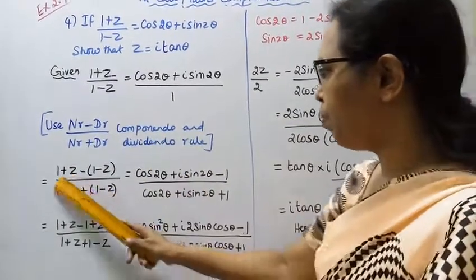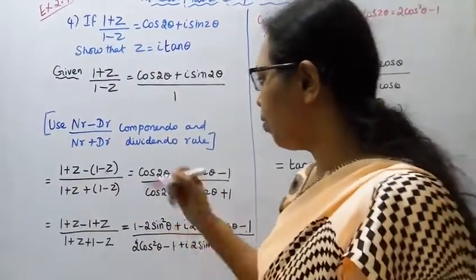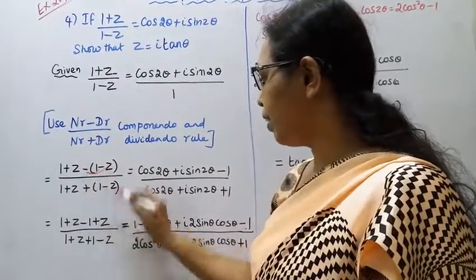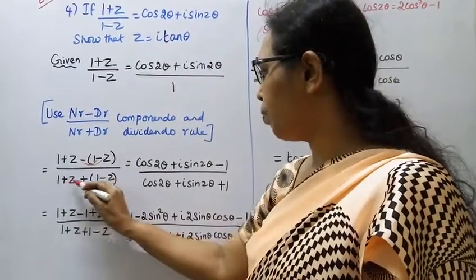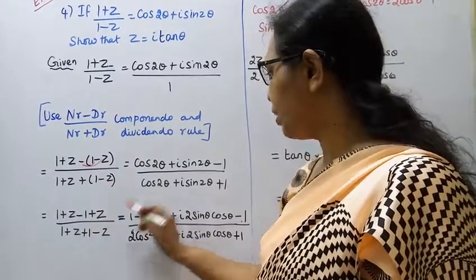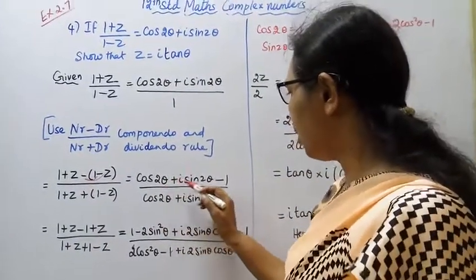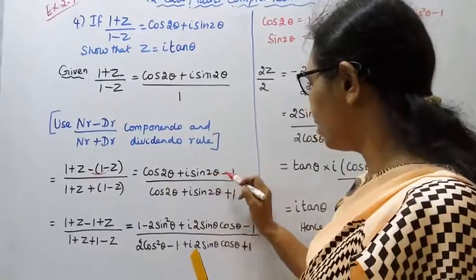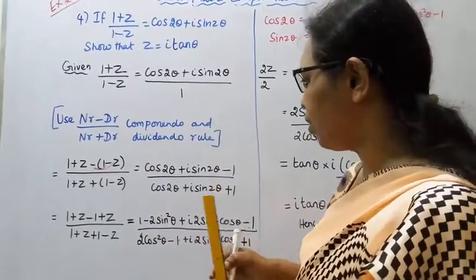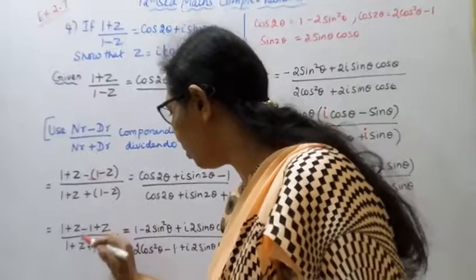Simplifying: (1+z) + (1−z) gives 2, and (1+z) − (1−z) gives 2z.